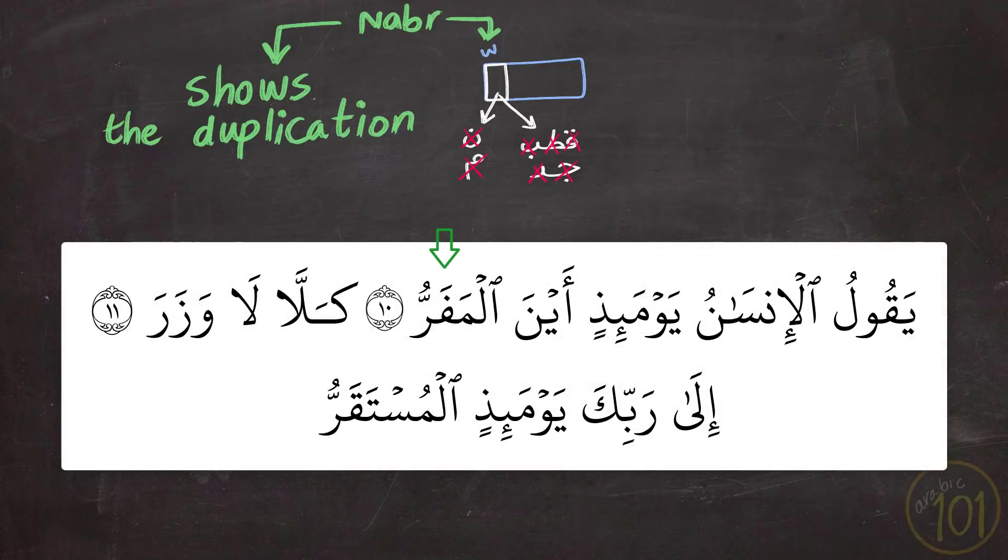One last example: يَقُولُ الْإِنسَانُ يَوْمَئِذٍ أَيْنَ الْمَفَرْ كَلَّا لَا وَزَرْ إِلَى رَبِّكَ يَوْمَئِذٍ أَيْنِ الْمُسْتَقَرْ. So we say أَلْمَفَرْ not أَلْمَفَرْ, and we don't say وَزَرْ because there is no شَدَّة at the end of the word. We say كَلَّا لَا وَزَرْ, not وَزَرْ. That is not what the word is. But at the end of the following ayah we say أَلْمُسْتَقَرْ, not أَلْمُسْتَقَرْ.